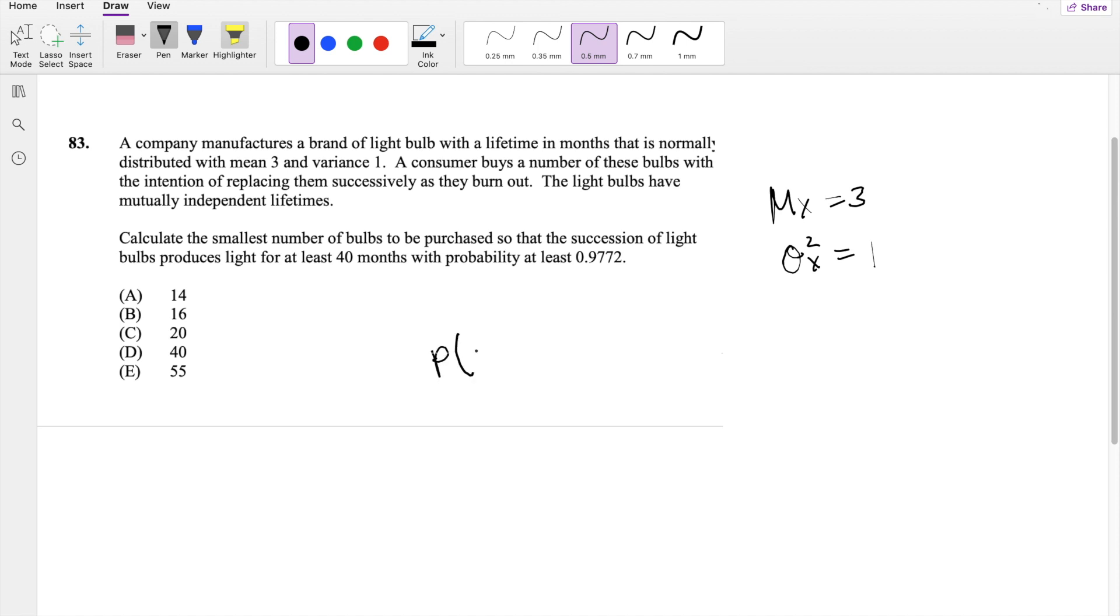So then they're saying, what is the probability that x star, where star means like some light bulb times n, or the distribution of x times n, where n is the number of light bulbs they buy, is at least greater than 40 months, with a probability of at least 0.9772.